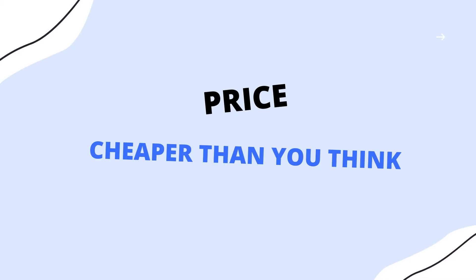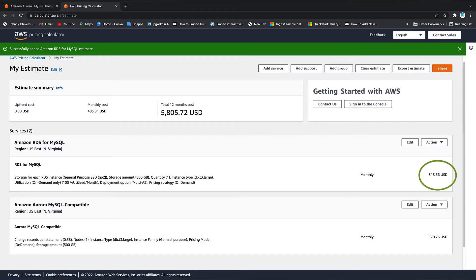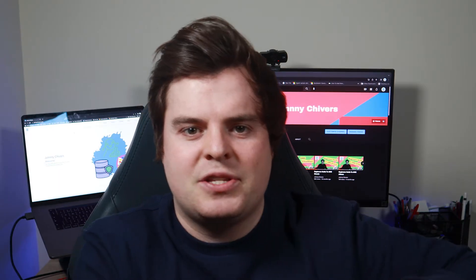The next fundamental difference is actually price — I'll put an example on screen. It surprises people to know that Aurora is actually 40% cheaper than the RDS version. There are probably a couple of reasons for this: one's the architecture, but there's also definitely a drive from AWS to push us towards that service. And regardless, whether you're a small bootstrapped startup or a massive enterprise, 40% is a lot of money — it could be savings made and then cost spent elsewhere.